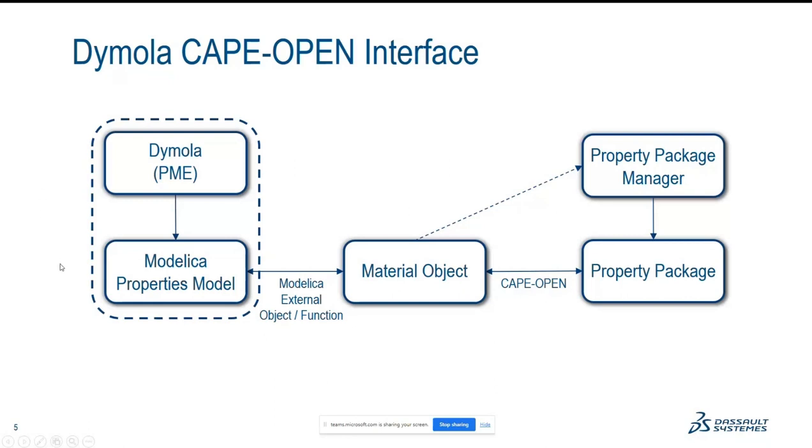So here on the left side is what I would call our front end. Here is Dymola as our PME. And within Dymola, we have created a properties model written in Modelica that is kind of a mirror class or a wrapper for the material object written in C++. And at the beginning of the simulation, the material object is instantiated from within Dymola. And then via Cape Open, the material object can communicate with the property package manager if needed or directly with the property package if it's standalone.